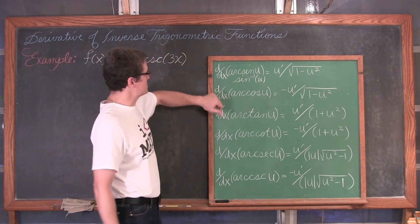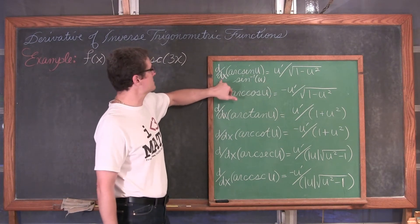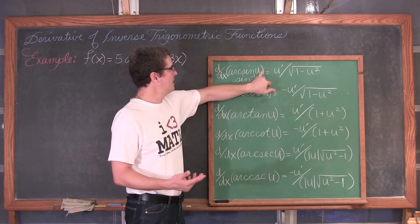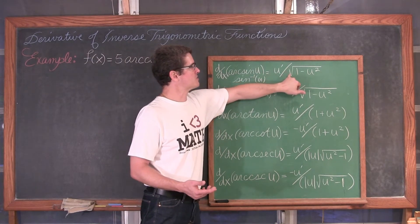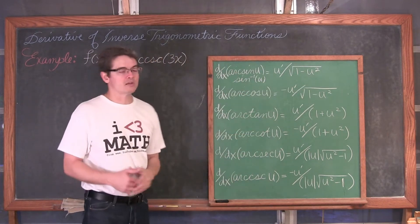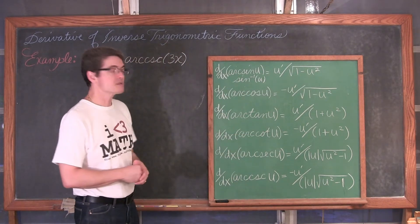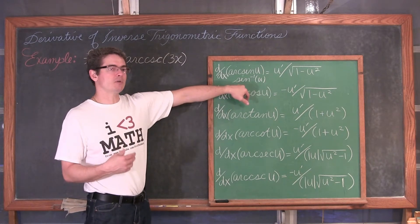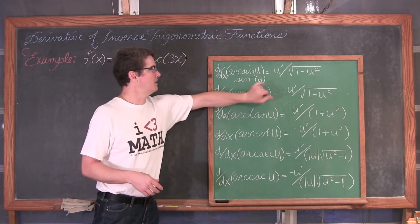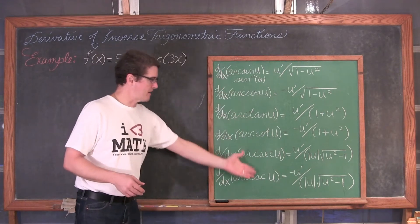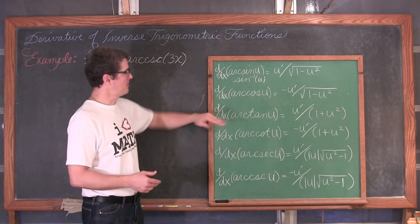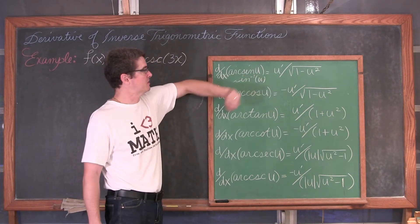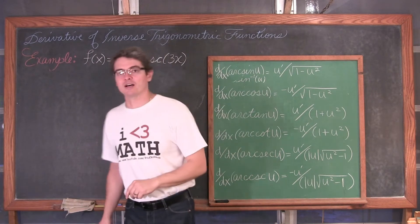I have a little bit of alternative notation here. We have the derivative with respect to x of arc sine of u, so I already have it set up for u-substitution, which is equal to u-prime over the square root of 1 minus u-squared. That is the derivative rule for arc sine. Arc sine is the alternative notation for the inverse sine of u, so your textbook might have this written slightly differently.